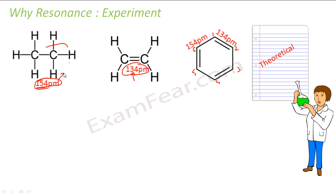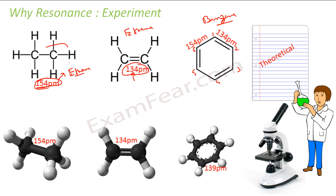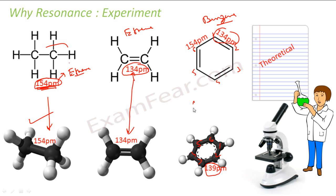But when chemists observed benzene using magnifying instruments, they found that ethane was perfectly fine — its bonds matched the theoretical predictions. However, when they saw benzene they were surprised: any carbon-to-carbon bond they measured was 139 picometers. They were amazed because 139 is somewhere between 134 picometers (double bond) and 154 picometers (single bond).